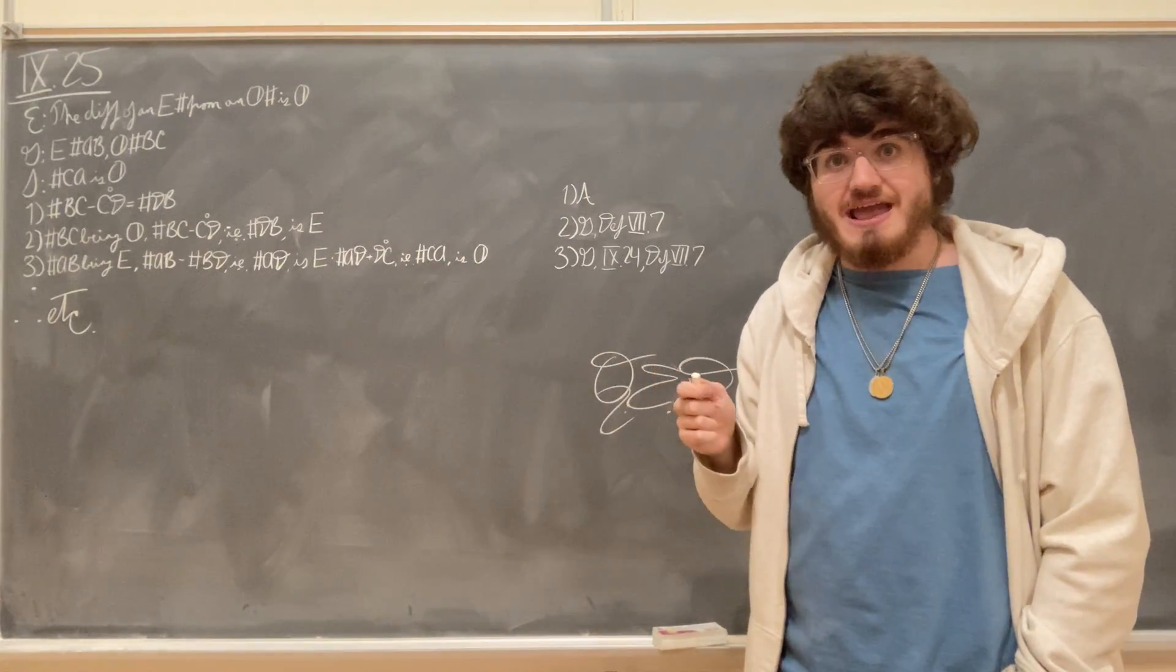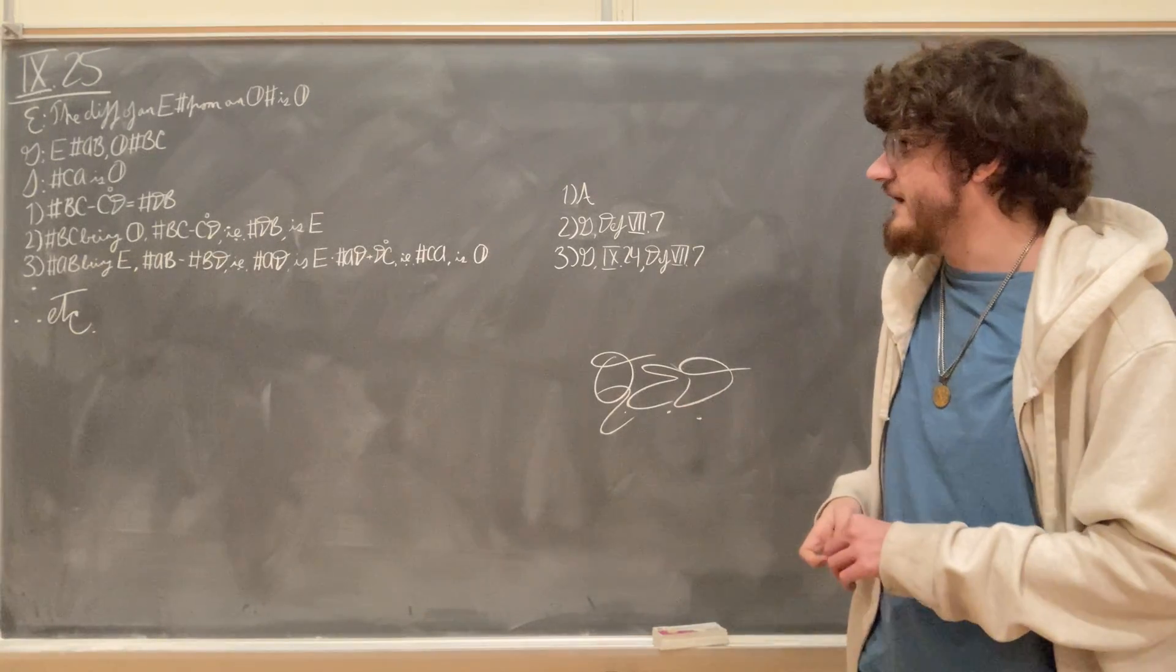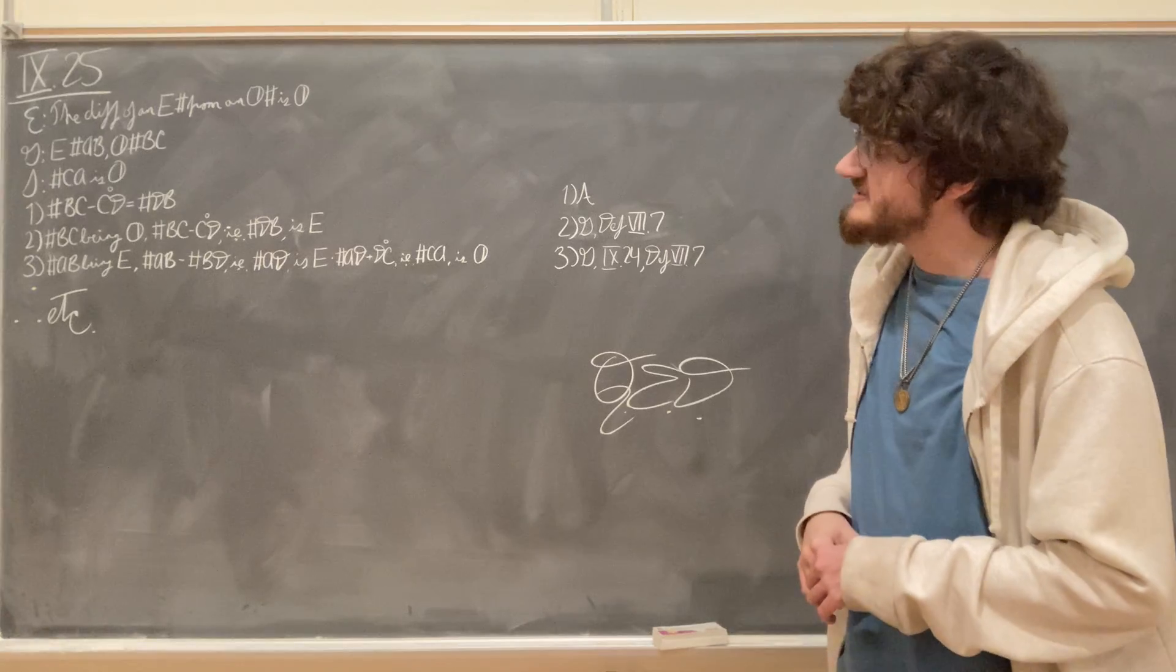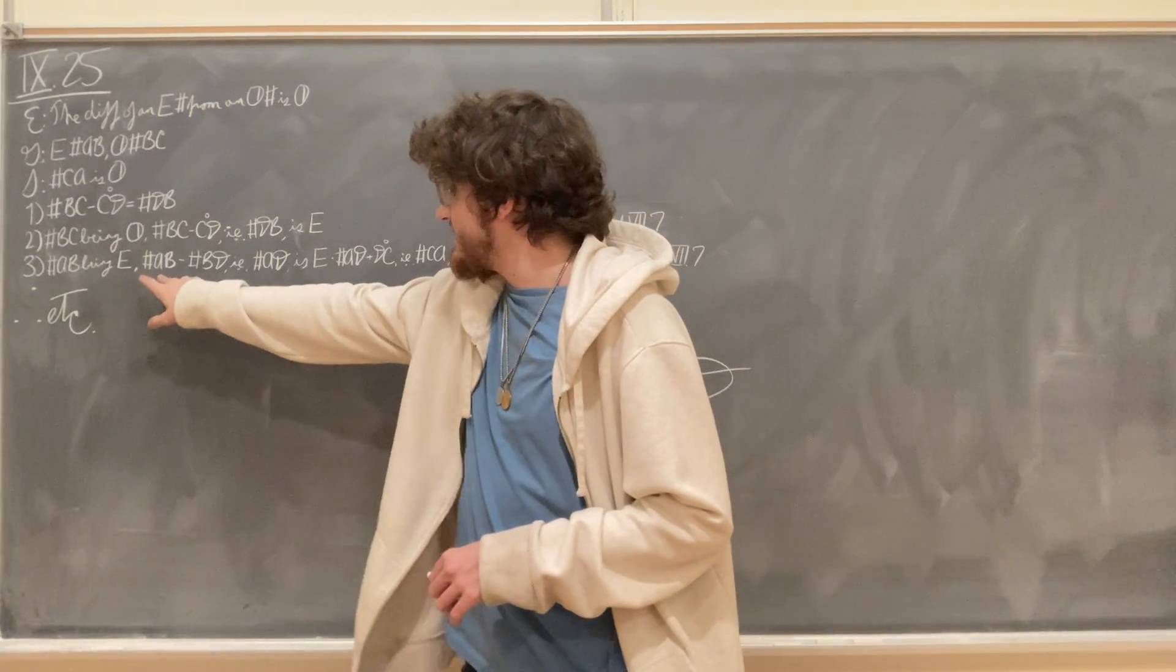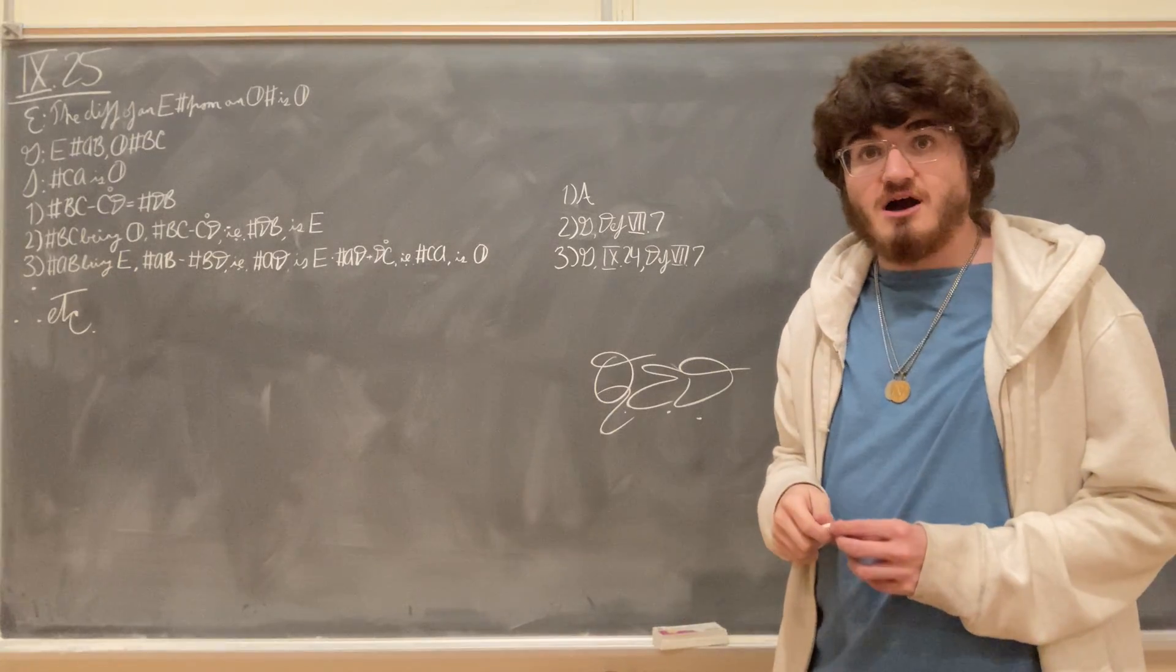But we also know that the number A, B is an even number. We were given that as well. So if we take their difference, if we take the difference of A, B from B, D, because both of those numbers are even,